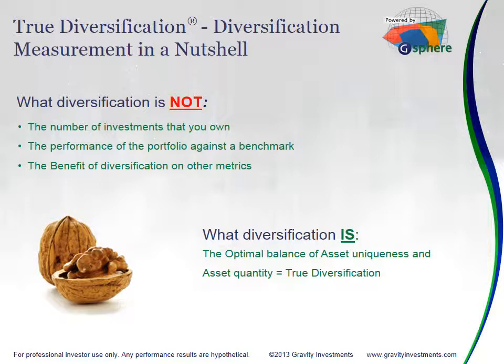What we find is that it's the optimal balance of the uniqueness of the assets — that's the systematic diversification part — and then the number of assets. The way that they combine, we call true diversification.